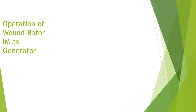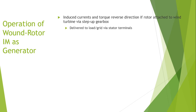Now I will discuss the operation of a wound rotor induction machine as a generator. The induced currents and torque reverse the direction, and in a wind turbine the machine provides an opposing force to the wind-driven rotor rotation.